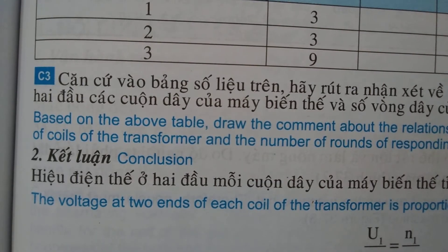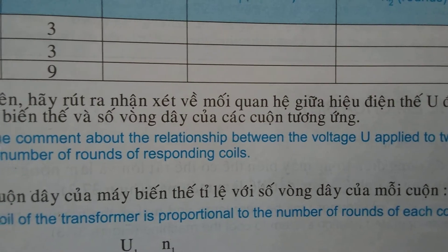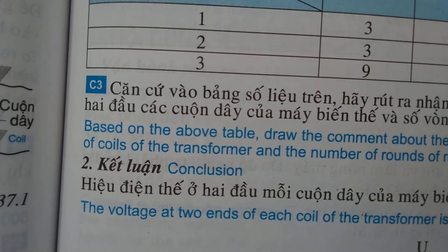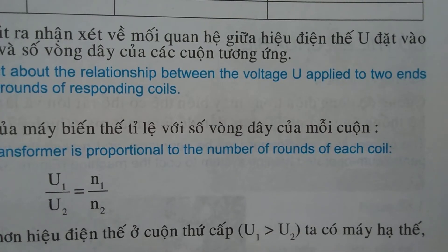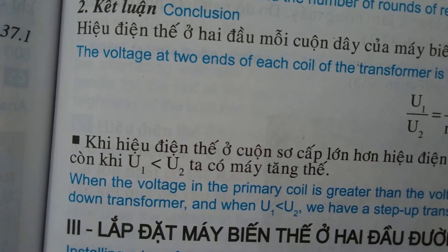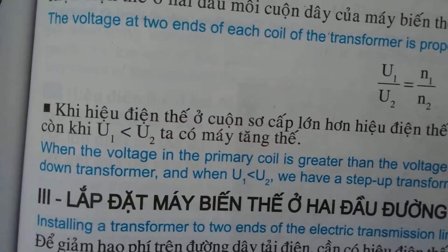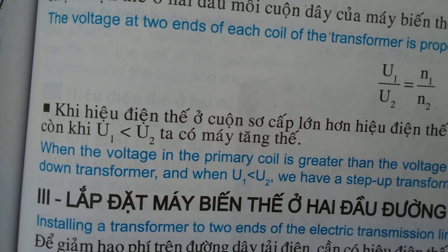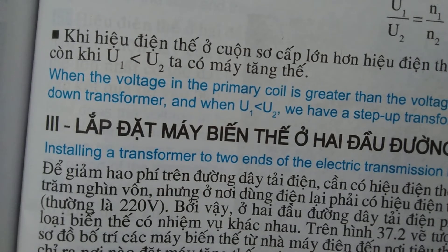Based on the above table, draw a conclusion about the relationship between the voltages at two ends of the coils of the transformer and the number of turns of the corresponding coils. Conclusion: The voltage at two ends of each coil is proportional to the number of turns of that coil. When U1 is greater than U2, we have a step-down transformer; when U1 is less than U2, we have a step-up transformer.